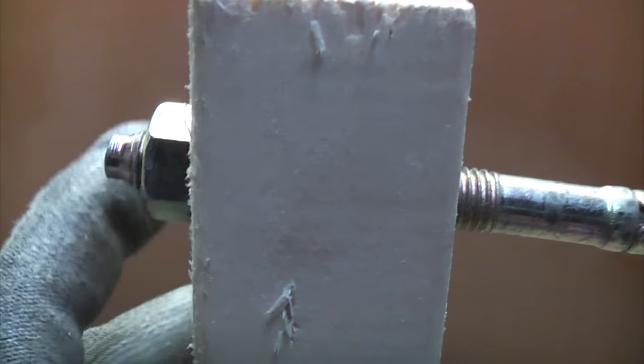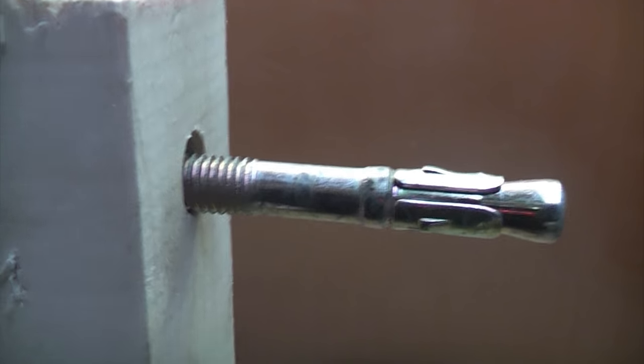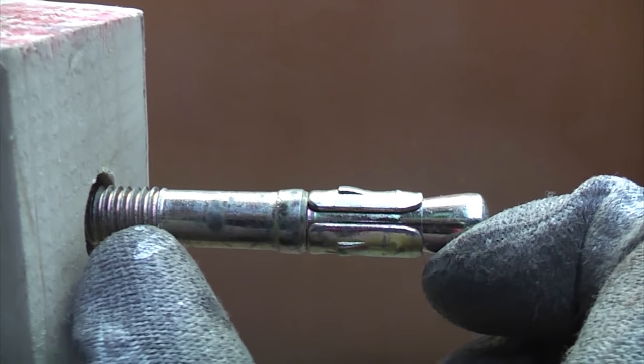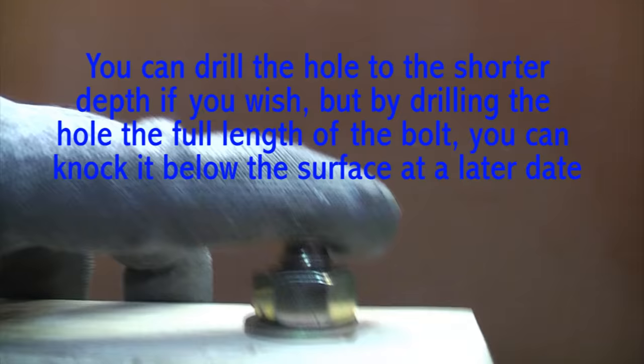The most important thing when you're using a through bolt is to drill a hole the correct diameter and the correct depth. A lot of people just drill the hole at that actual depth which isn't deep enough, because what may happen is you may come along and think you don't want that bolted down there anymore.